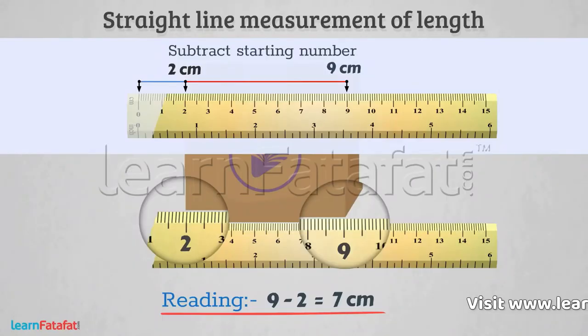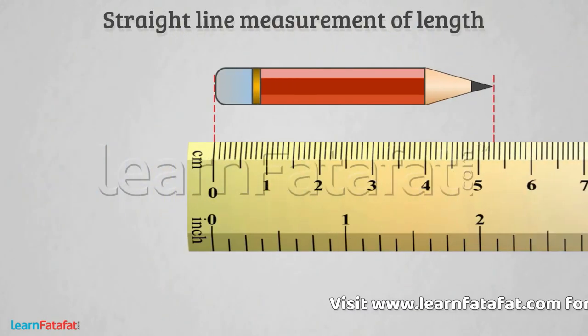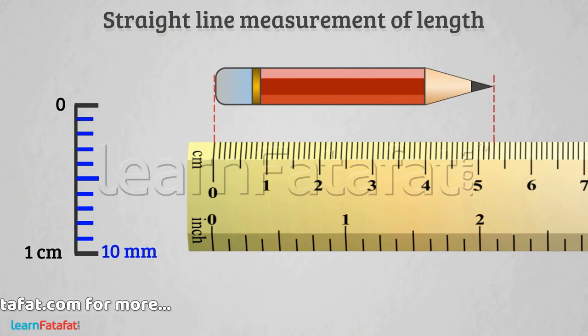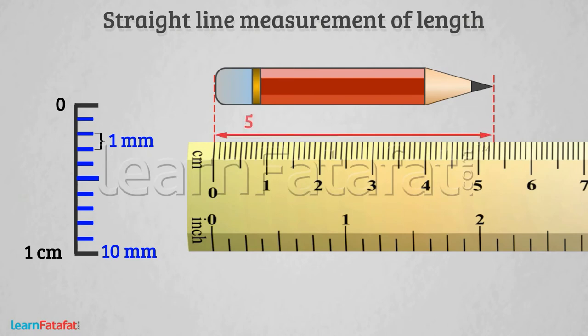Can you tell me the measurement in this case? We have learned that 1 centimeter is equal to 10 millimeters. Each division between the two neighboring numbers is 1 millimeter. So, in this case, the measurement is 5 centimeter and 3 millimeter. Therefore, the measurement is 5.3 centimeters.